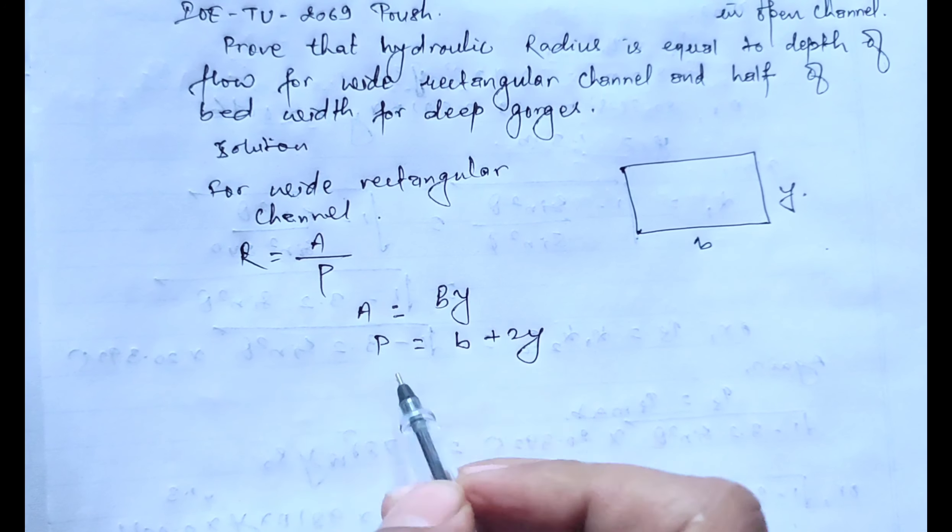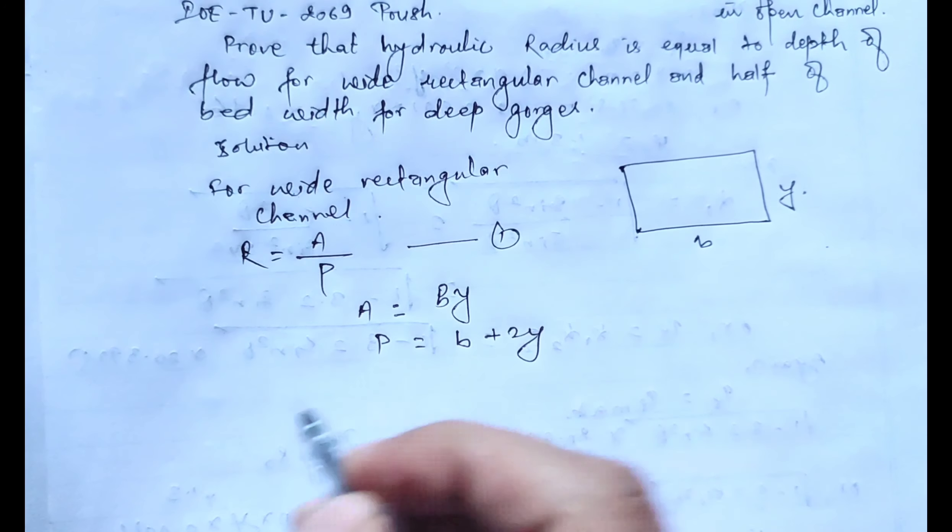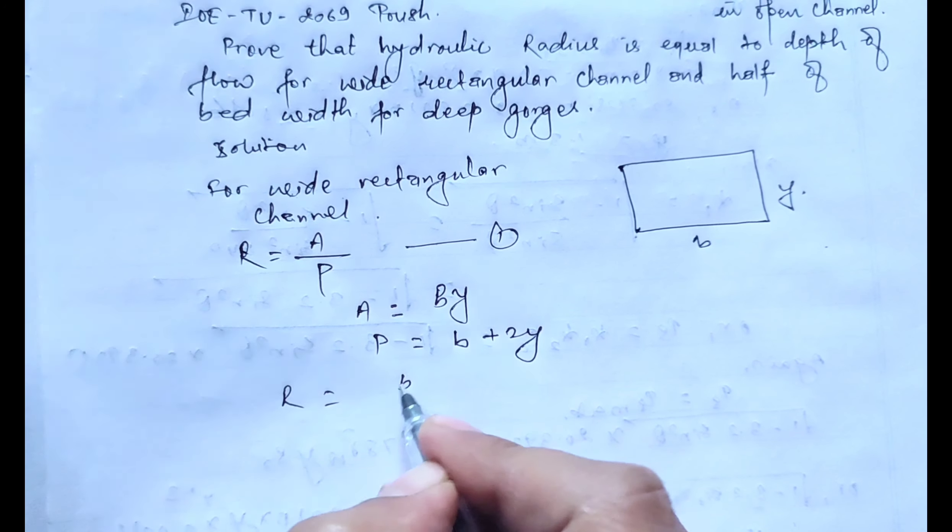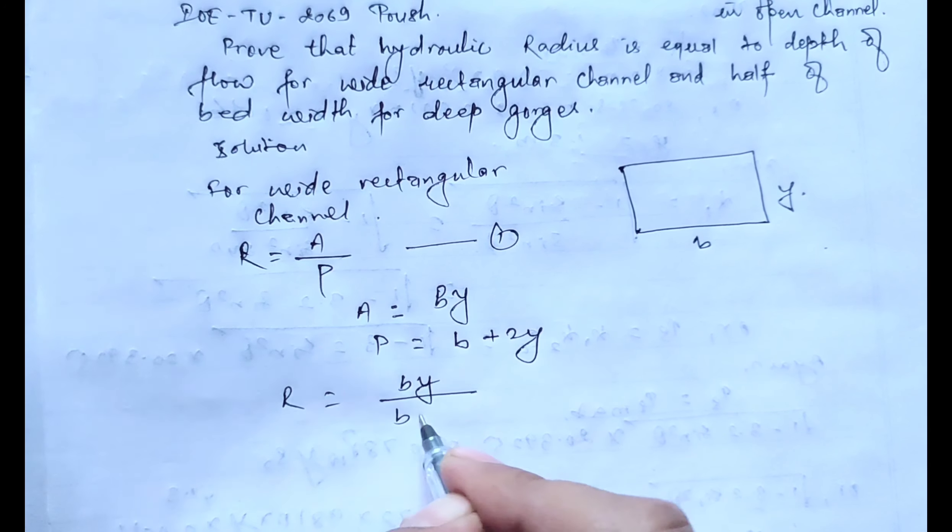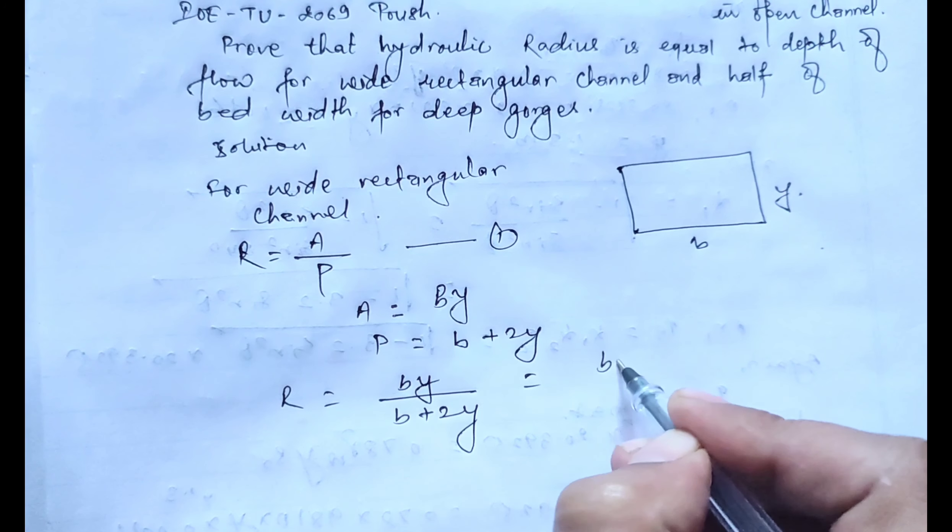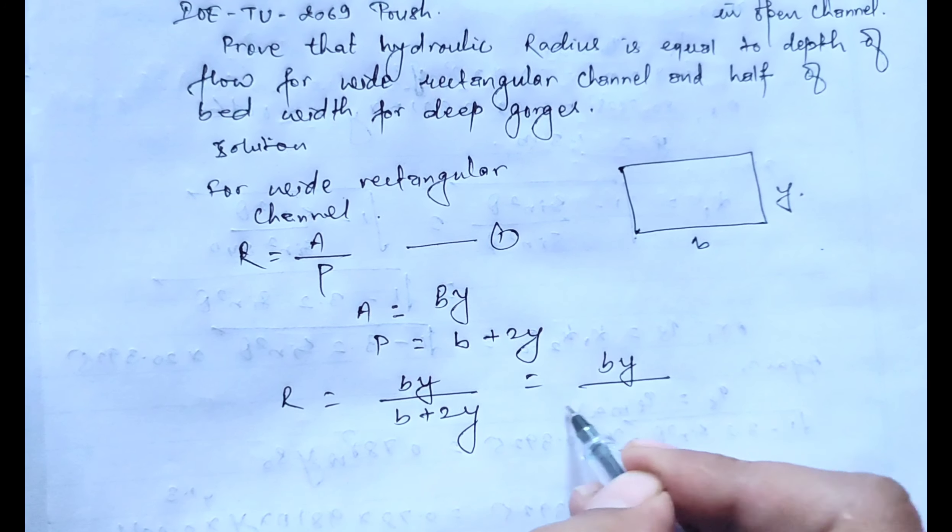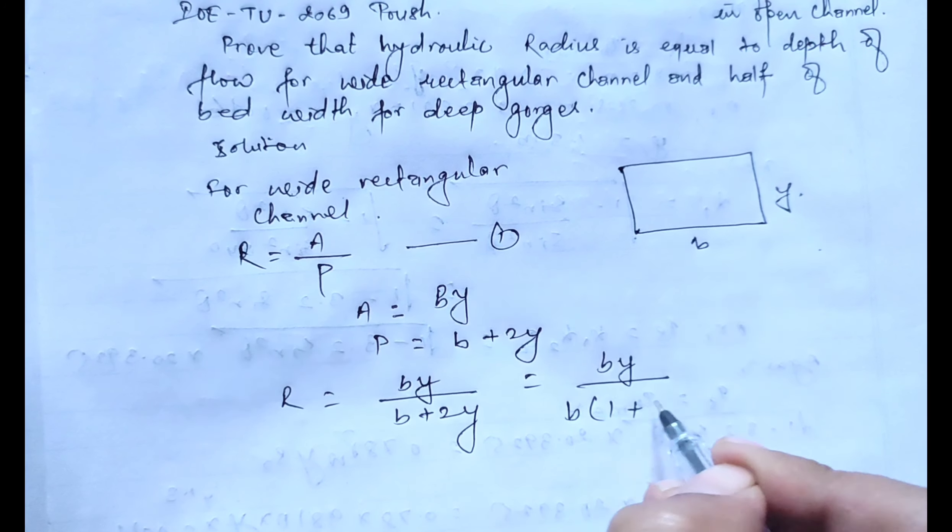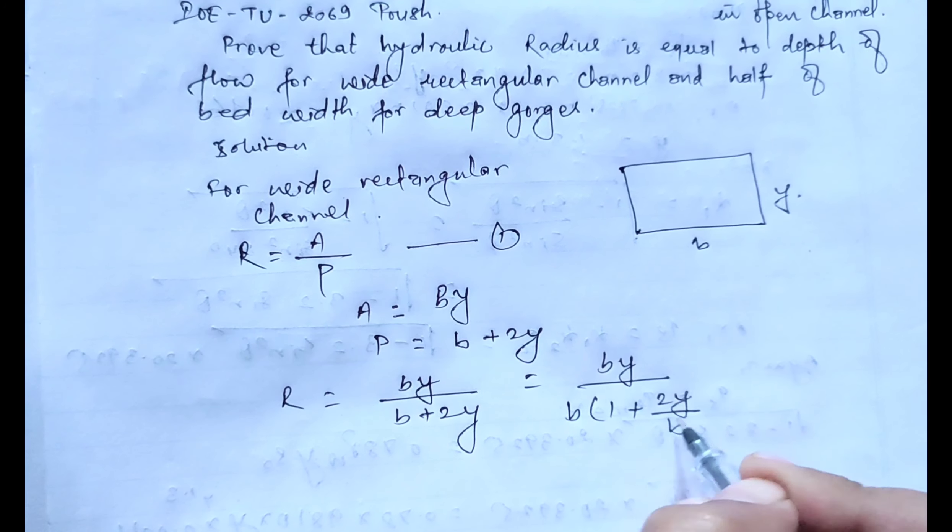Now placing the value of A and P in equation one, that is R equals BY divided by B plus 2Y, and this can be simplified or written as BY divided by B times 1 plus 2Y by B.